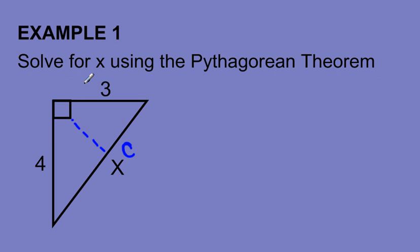So that's my hypotenuse. The other two sides I'm going to label a and b, and again, it doesn't matter which one is which. Remember, the formula for Pythagorean Theorem is c squared equals a squared plus b squared.